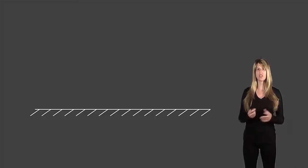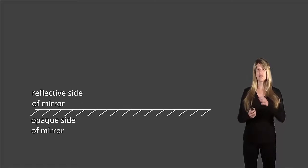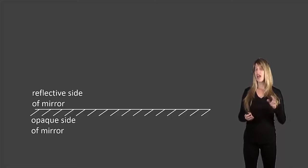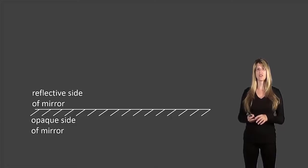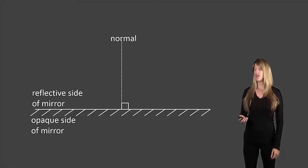We'll start with just a little bit of terminology. If this is a mirror here, the smooth side is the reflective side where you would stand to look at yourself, and the side with the little hatch marks is the opaque side. If you looked at that side you wouldn't be able to see yourself at all.